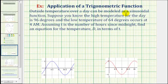The outside temperature over a day can be modeled as a sinusoidal function. Suppose you know the high temperature for the day is 96 degrees and the low temperature of 64 degrees occurs at 4 AM. Assuming T is the number of hours since midnight, find an equation for the temperature D in terms of T.